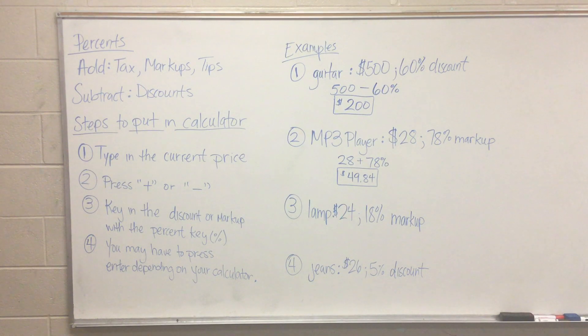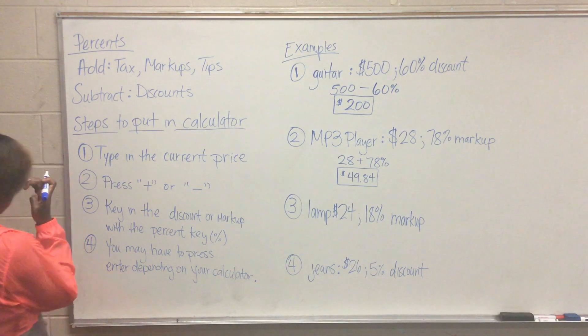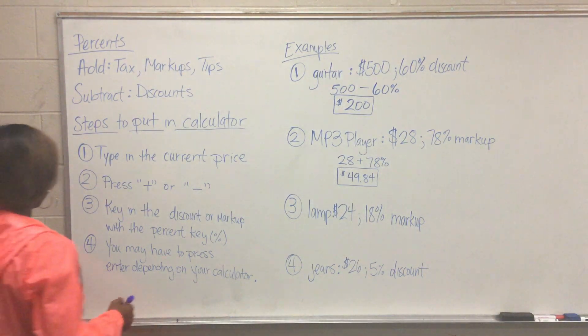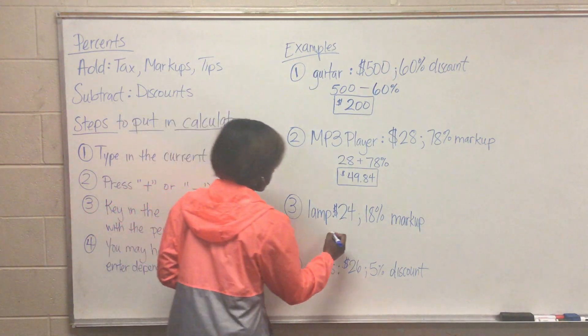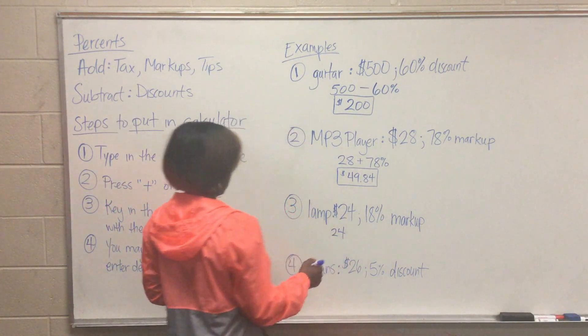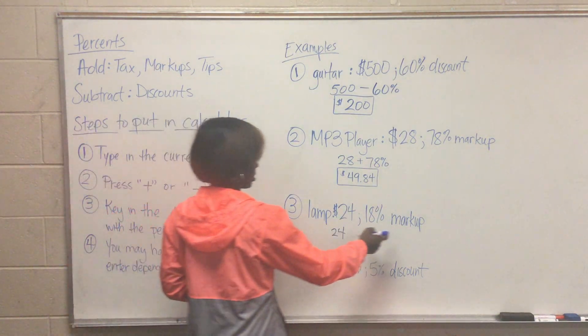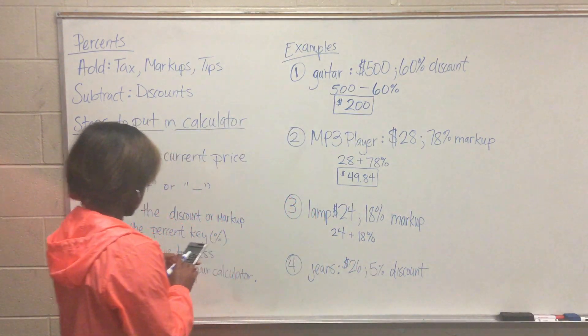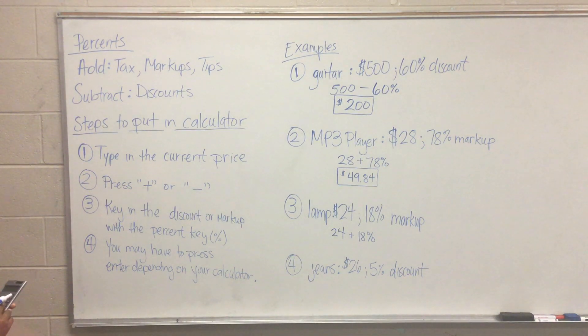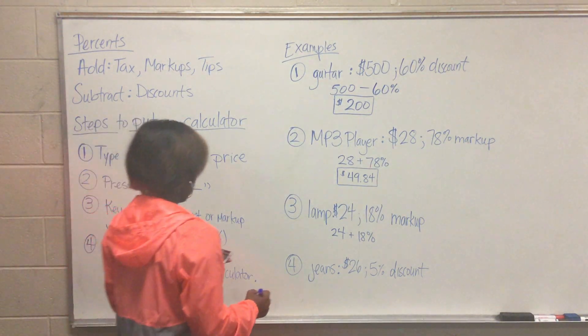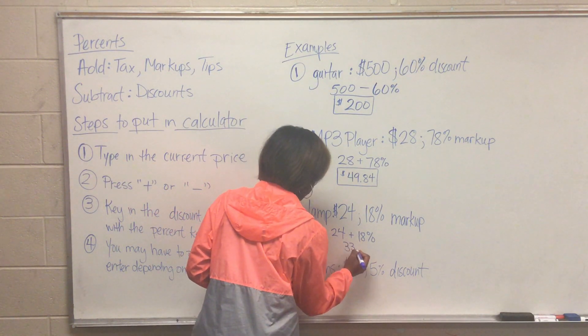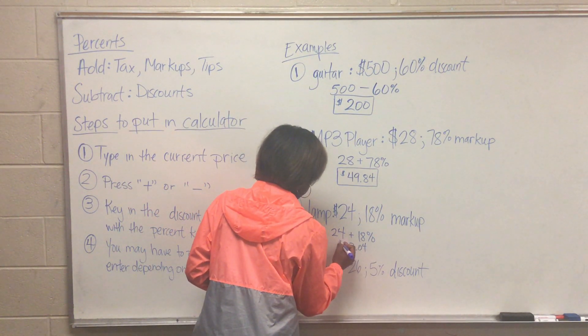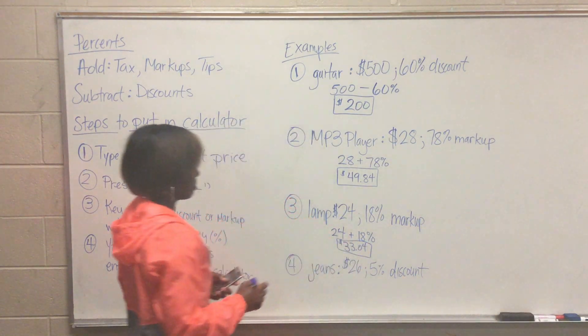Alright. So number three we have a lamp that's $24 and it is an 18% markup. So when I hear markup I know I need to add. Type in the current price which is $24. I know I'm going to add because it is a markup. And I'm going to add the percent as it is. So 24 plus 18%. That gives me $28.32. And as always I'm doing what? Boxing my answers.